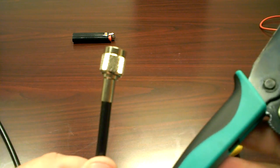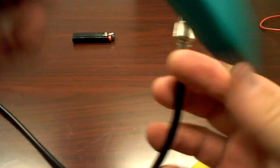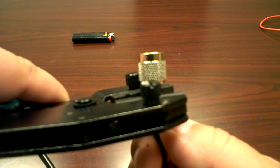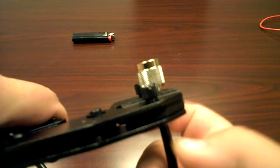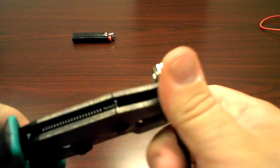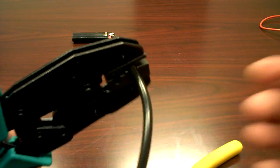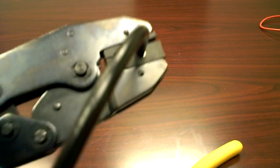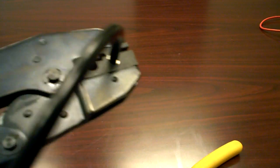Next, we're going to use our ratchet crimp connector. The crimpers we're using here are ordered online. Use your standard ratchet crimpers. Make sure we get it ratcheted down really good.